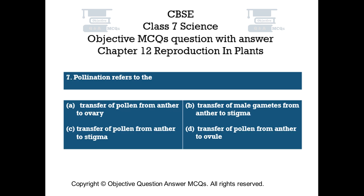Question number 7. Pollination refers to the: Option A: Transfer of pollen from anther to ovary. Option B: Transfer of male gametes from anther to stigma. Option C: Transfer of pollen from anther to stigma. Option D: Transfer of pollen from anther to ovule.